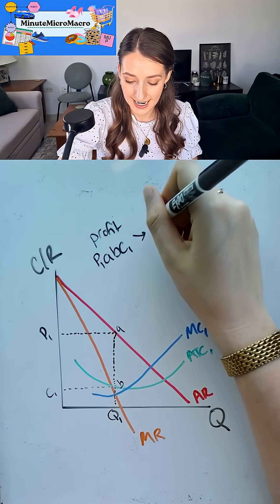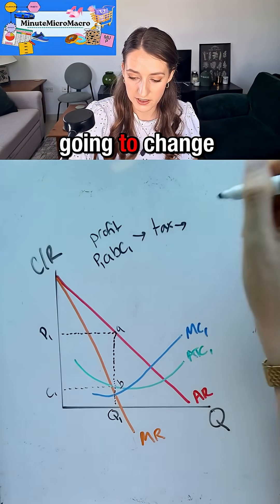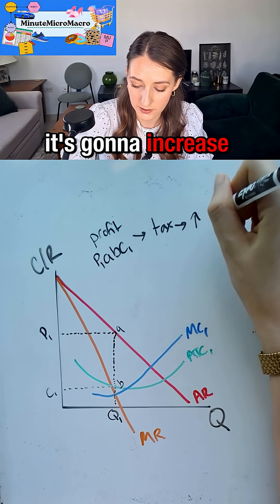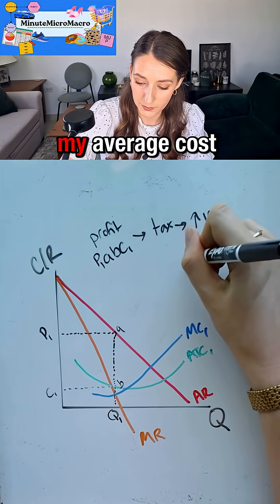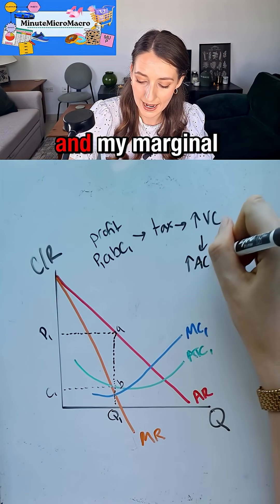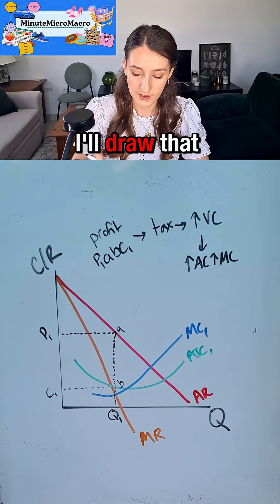Now we're going to then be taxed. A tax is going to change my variable costs—it's going to increase my variable costs. If there's a change in variable costs, that means both my average cost and my marginal costs are going to increase. I'll draw that first.